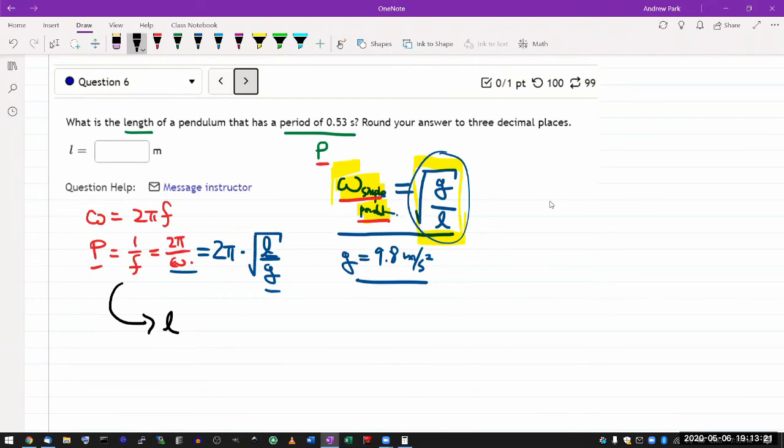All I have to do is solve this for the length of the pendulum L. Solving it for length, I'm squaring both sides and moving the coefficients over. You get g times P squared over 4π squared.